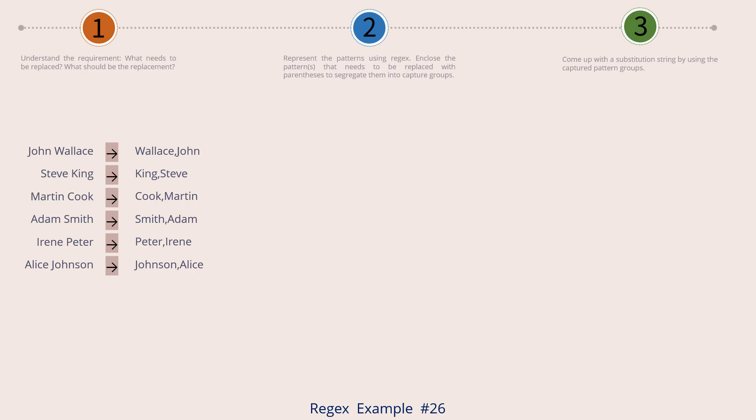The input strings are names of persons. The strings follow the format: the first name followed by a space followed by the last name. The first string is John space Wallace. We want to capture the first name and last name from this string and then restructure the string in another way.